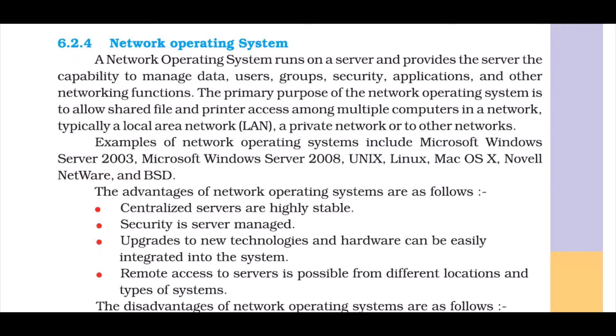Network Operating System: A network operating system runs on a server and provides the server capability to manage data, users, groups, security, applications and other networking functions. In a network operating system, there is a main server or main computer that controls everything — it determines what kind of users, what kind of data and what kind of security should be present on each and every computer in the network.